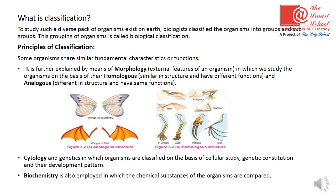Classification can also be done on another basis called biochemistry. Biochemistry is the branch of science in which we study chemical components. Organisms' chemical components and substances are studied and compared to form the basis of classification.